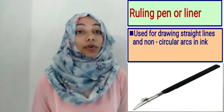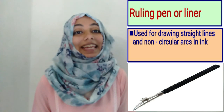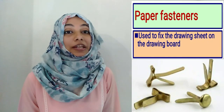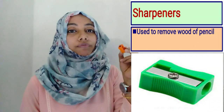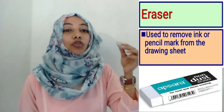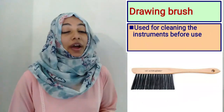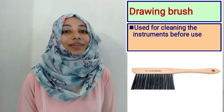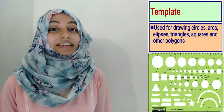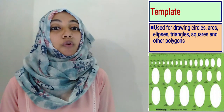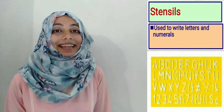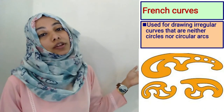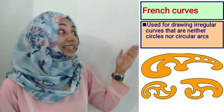Rolling pen or liner is used for drawing straight lines and non-circular arcs in ink. Paper fasteners are used to fix drawing sheets on the drawing board. Sharpeners are used to remove wood from pencils. Erasers are used to remove ink or pencil marks from the drawing sheet. Drawing brushes are used for cleaning instruments before use. Templates are used for drawing circles, arcs, ellipses, squares, and other polygons. Stencils are used to write letters and numbers. French curves are used for drawing irregular curves that are neither circles nor circular arcs. These are all the various instruments used for drawing purposes. Thank you.